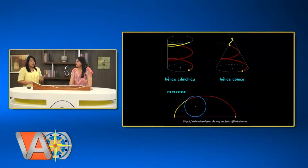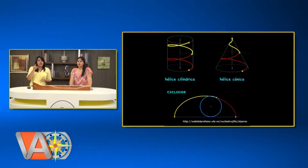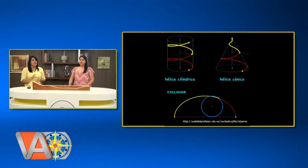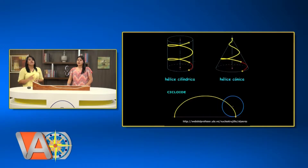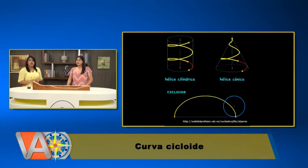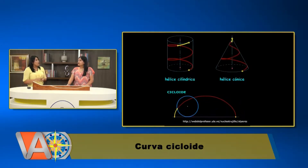Pero si la distancia más corta entre dos puntos es una línea recta, ¿por qué llega más rápido el de la curva? Todo esto tiene que ver con las propiedades de la curva cicloide. Una curva cicloide es aquella que se forma cuando un punto de una circunferencia es marcado mientras esta circunferencia va rotando sin deslizarse a lo largo de una línea. En el tiempo de Isaac Newton, él erró al decir que esa curva cicloide era exactamente la mitad de un círculo.